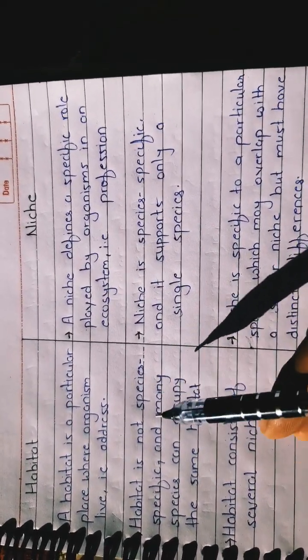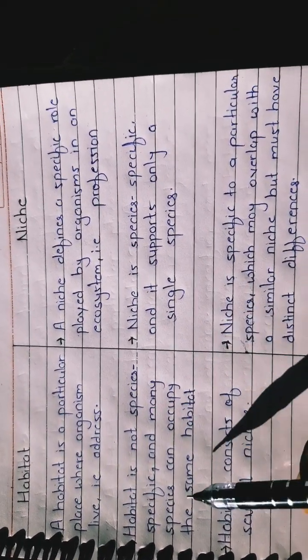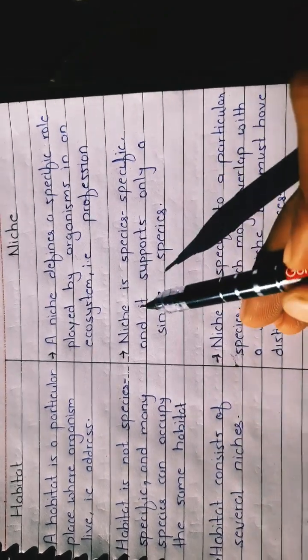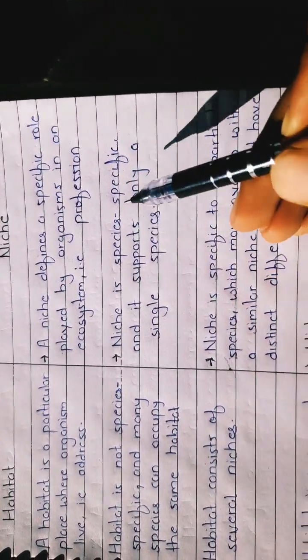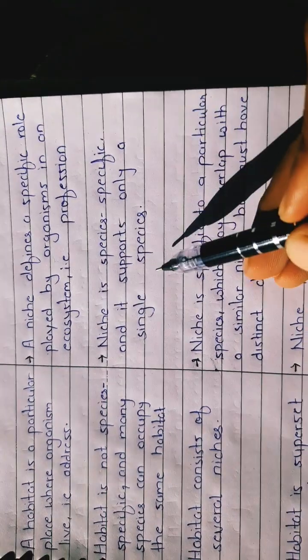Habitat is not species-specific and many species can occupy the same habitat. Niche is species-specific and it supports only a single species.